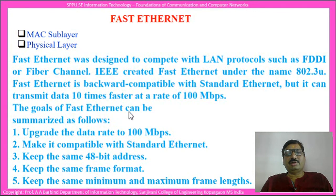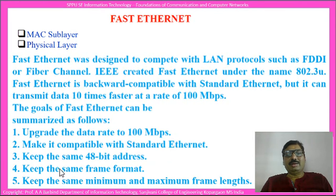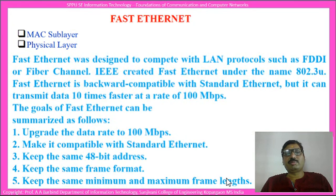The goals of Fast Ethernet can be summarized as follows: the first goal is to upgrade the data rate to 100 Mbps; it is compatible with standard Ethernet; it has kept the same 48-bit address; it gives the same frame format as standard Ethernet; and it keeps the minimum and maximum frame length of standard Ethernet. The major change here is the change in data rate from 10 Mbps to 100 Mbps.